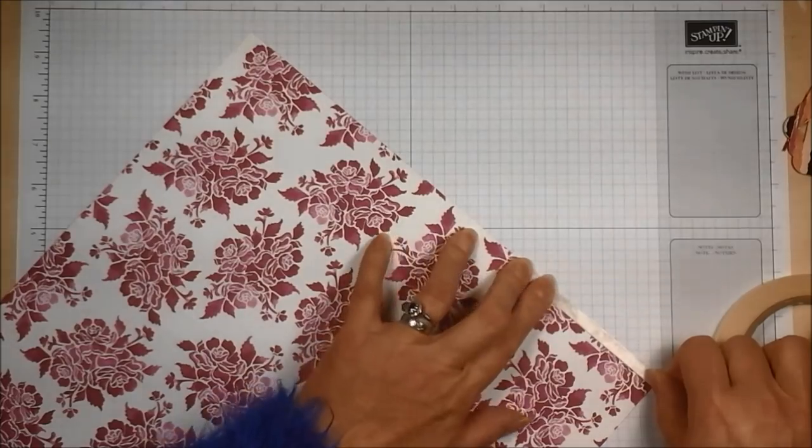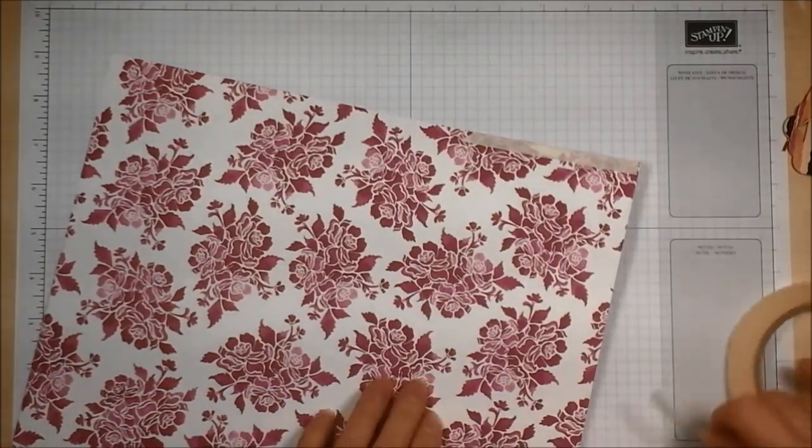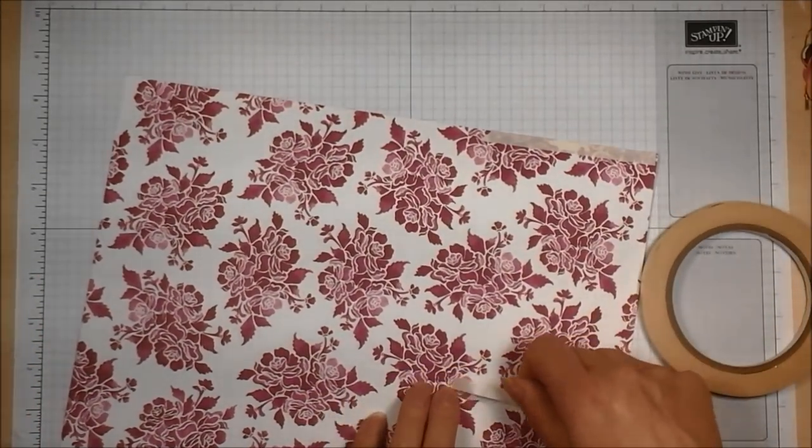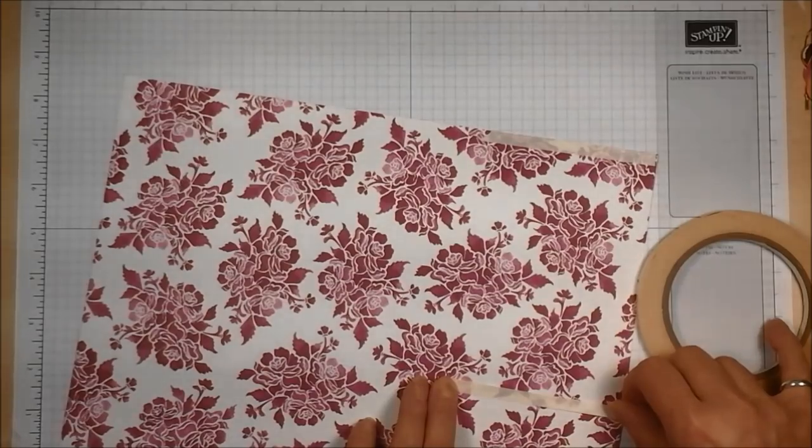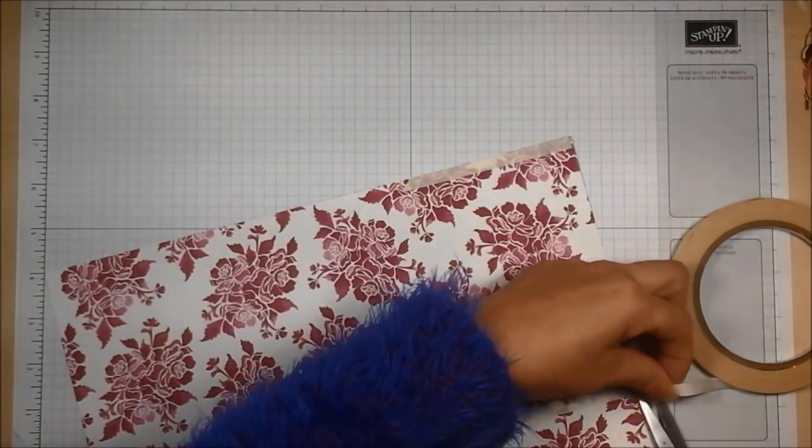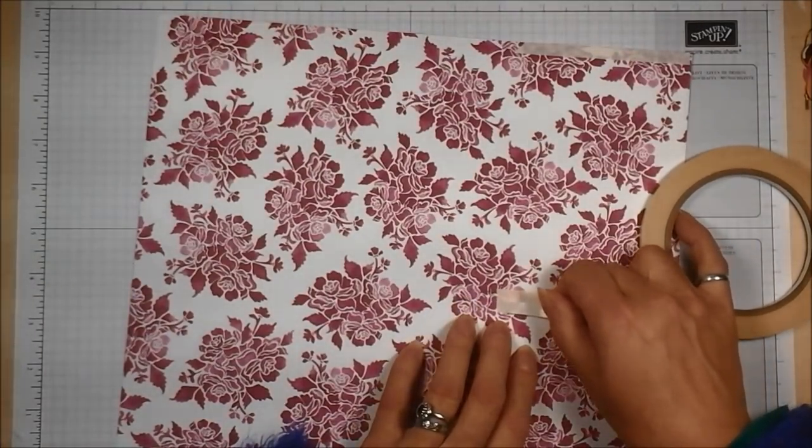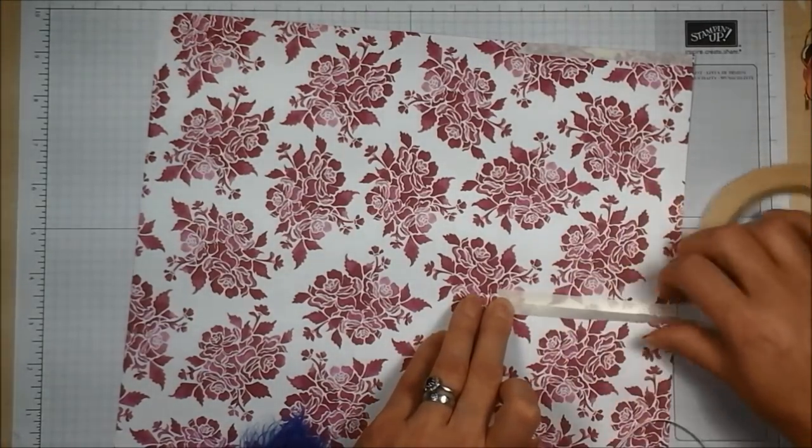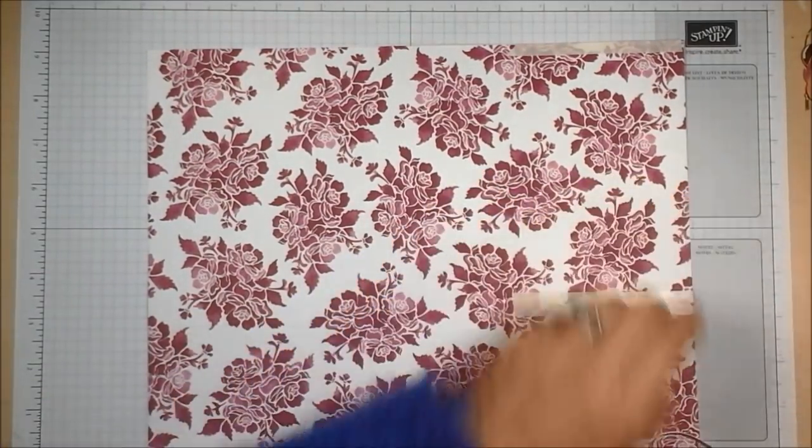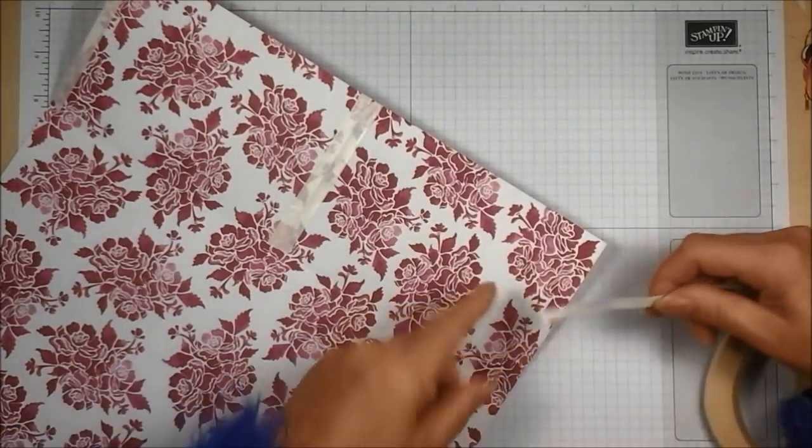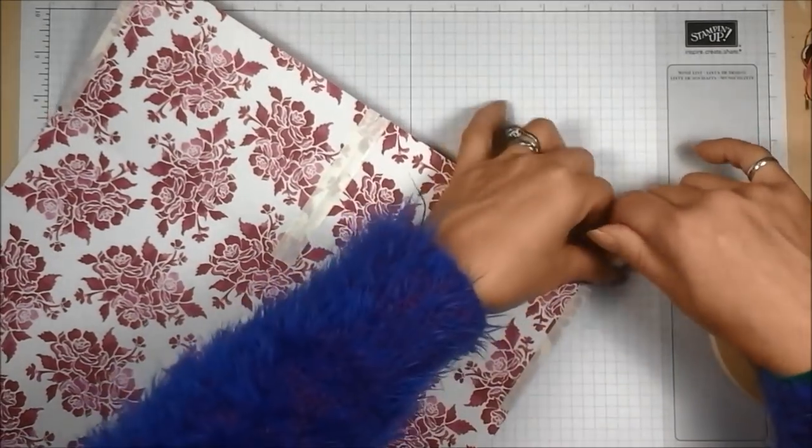And then between those two fold lines, which even I'm having trouble seeing again, I'm going to put some tear and tape. And one final piece on this other end again up to that fold line at the four inch mark and bring the tape down.